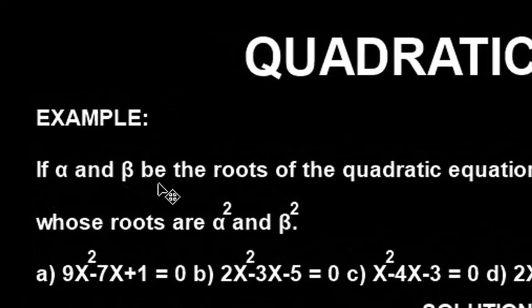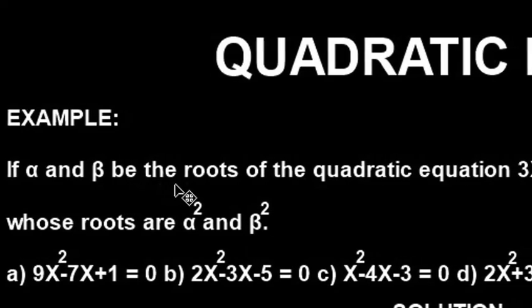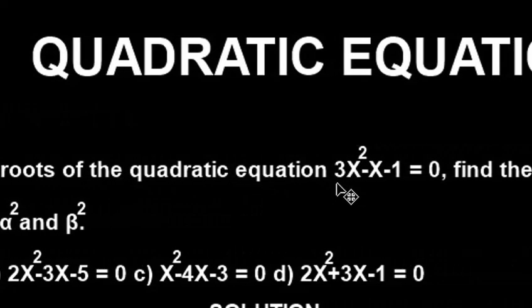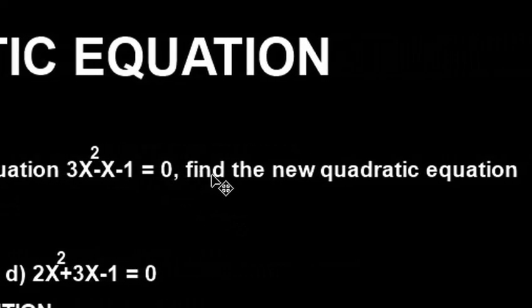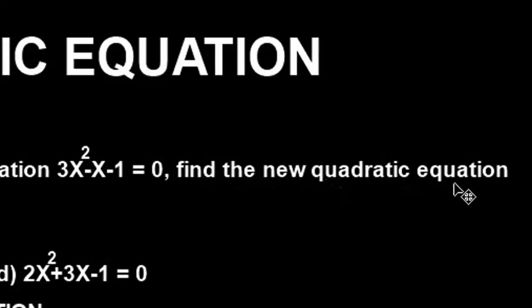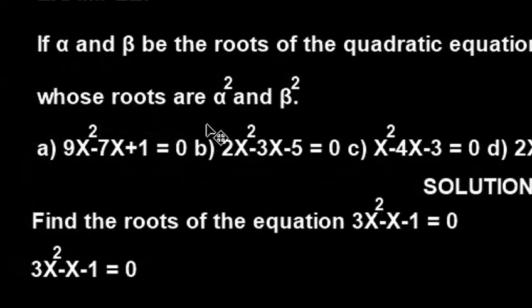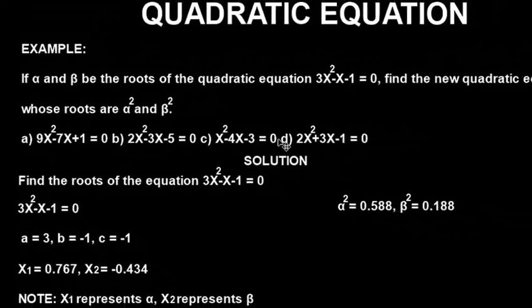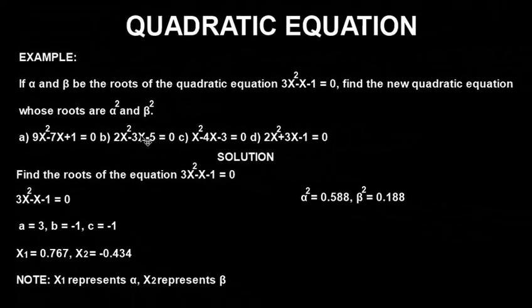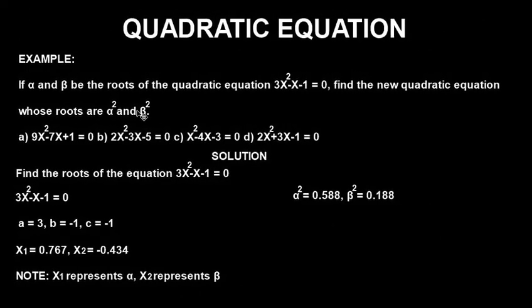The example says: if alpha and beta are the roots of the quadratic equation 3x² − x − 1 = 0, find the new quadratic equation whose roots are alpha squared and beta squared. These are our answer options. Though alpha and beta are an advanced aspect of quadratic equations, I will make it very easy in this video using the Casio calculator.